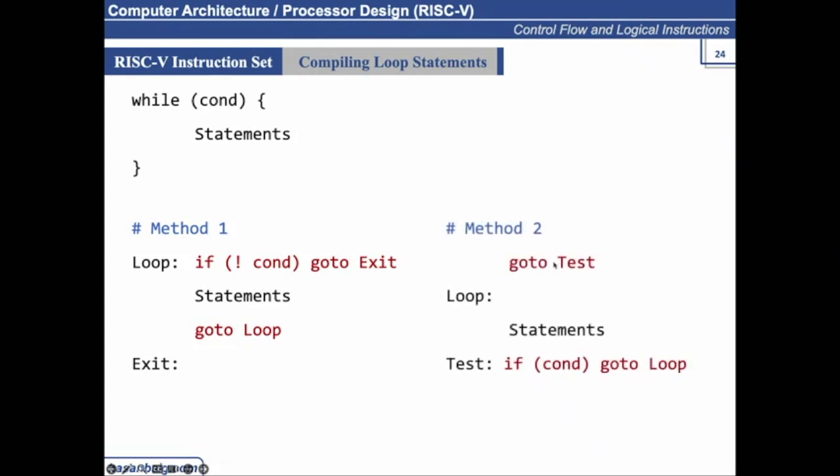Another method is that you first go to check the test. Suppose you have a program written and the control is reading your program from top to bottom. It is executing line by line and it reaches to this point. So it will go to test and it will check for the condition. If condition satisfy, then it go to this statement loop and start executing the loop structure.